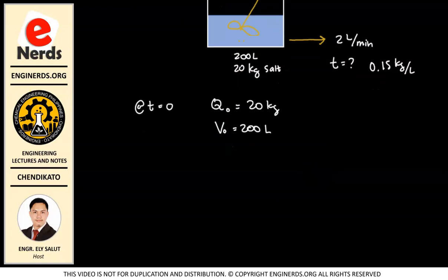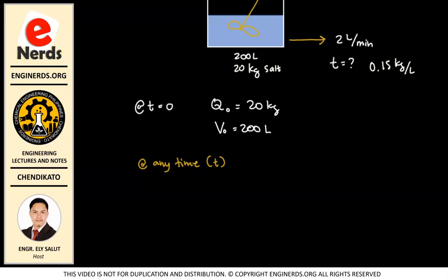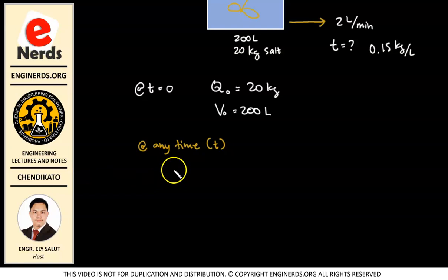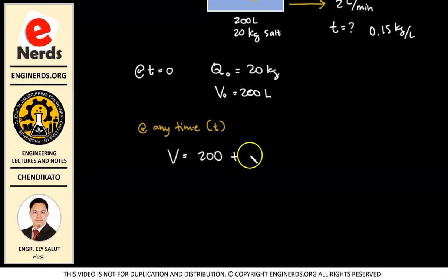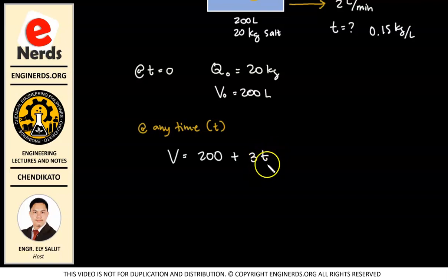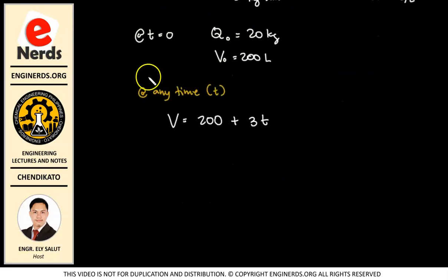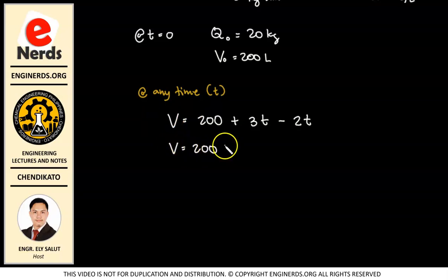At any time T, what will be our volume? Initially we have 200 liters. There is brine coming in at 3 liters per minute, so we add 3 times T. And it is coming out at the rate of 2 liters per minute, so we subtract 2 times T. Since these are similar terms, we can simplify: V(T) = 200 + T.